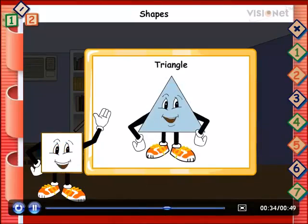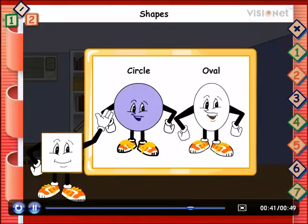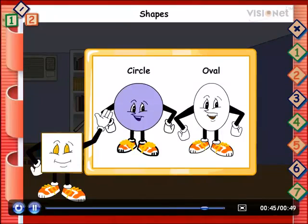This is my friend triangle. It has three sides and three corners but look at my friend's circle and oval. They do not have any sides or corners. They have a curved surface.